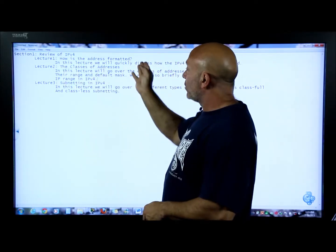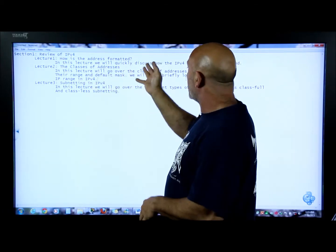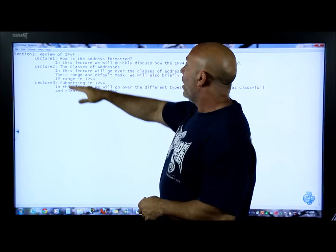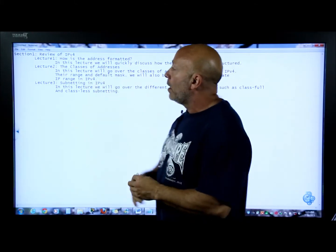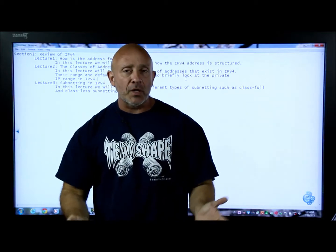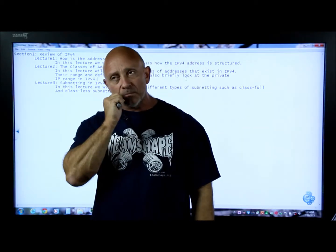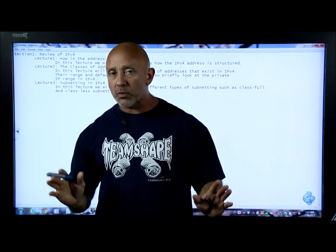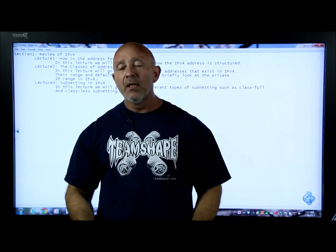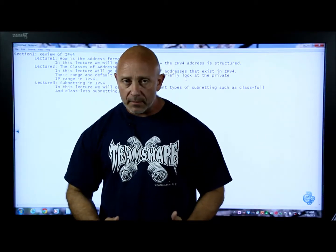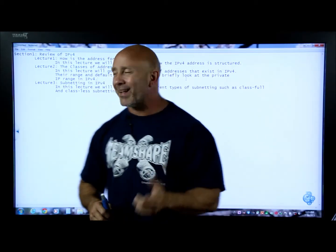First lecture, which is going to be this one, is how the address is formatted. We're going to discuss how the IPv4 address looks like, the classes of addresses, and then a little review on subnetting. The method that we use for subnetting - to give you a heads up on lecture three - is the same method we're going to use for subnetting an IPv6 once we get there. So it's going to be a lengthy course, it's going to be a detailed course, we're going to have fun with it, but we are going to take our time.